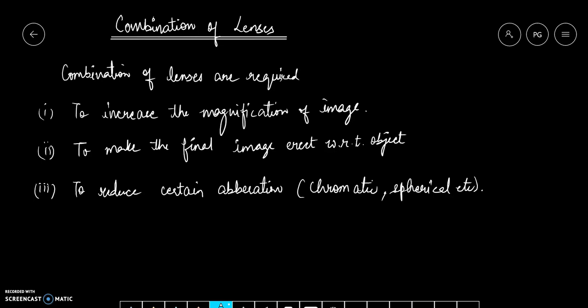Second, to make the final image erect with respect to object. In case of a convex lens, the final image formed is inverted. If we use one more lens, then we can make it erect with respect to the object.